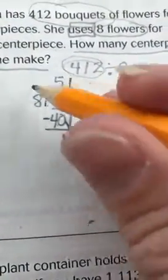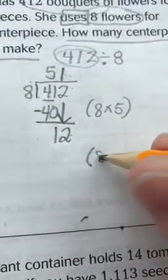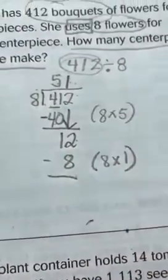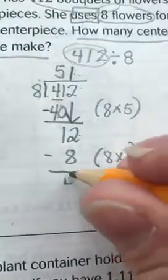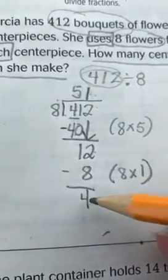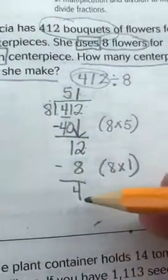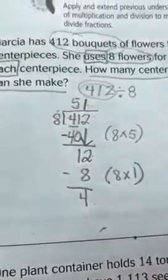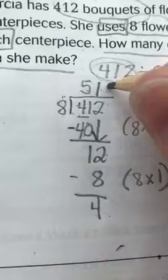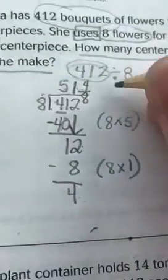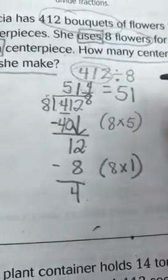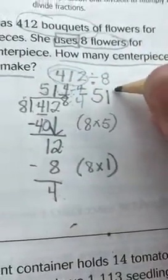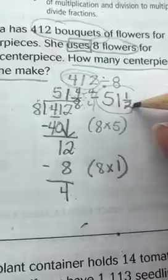Essentially I'm giving one flower to each of my eight centerpieces: eight times one means I'm taking eight away. When I take those away I end up with a remainder of 4. Check your remainder against your divisor — since 4 is less than 8, it can't go in again. I express the remainder as a fraction: 4/8, which is equivalent to one half — I can divide numerator and denominator both by 4. So I have 51 and a half centerpieces.